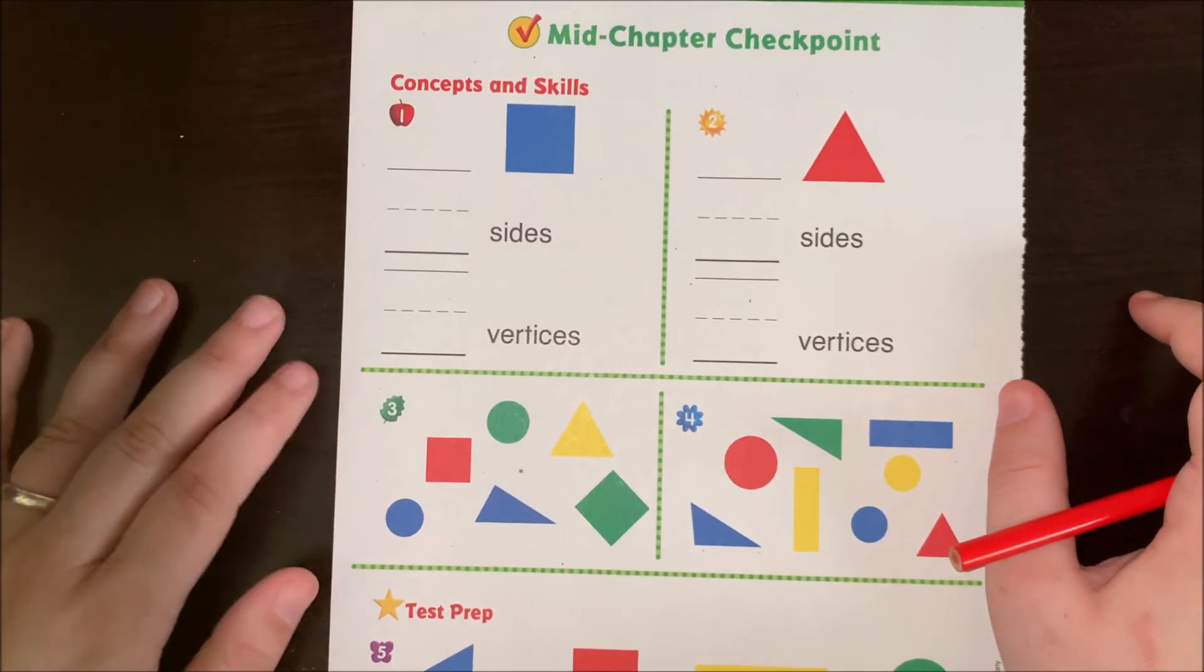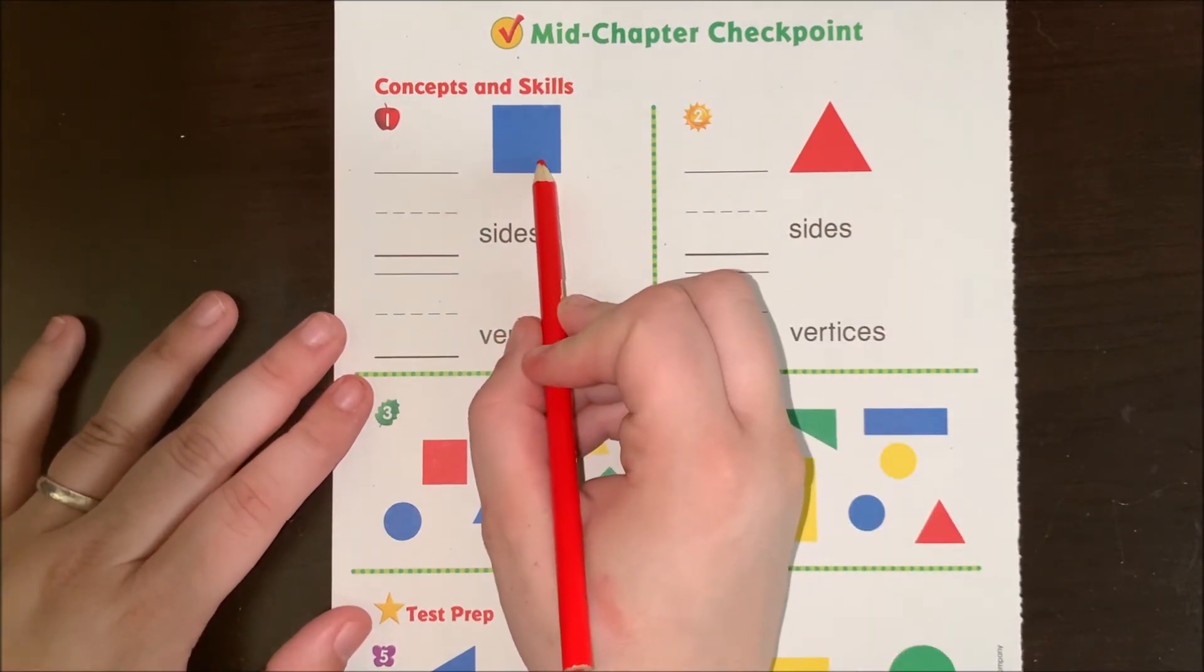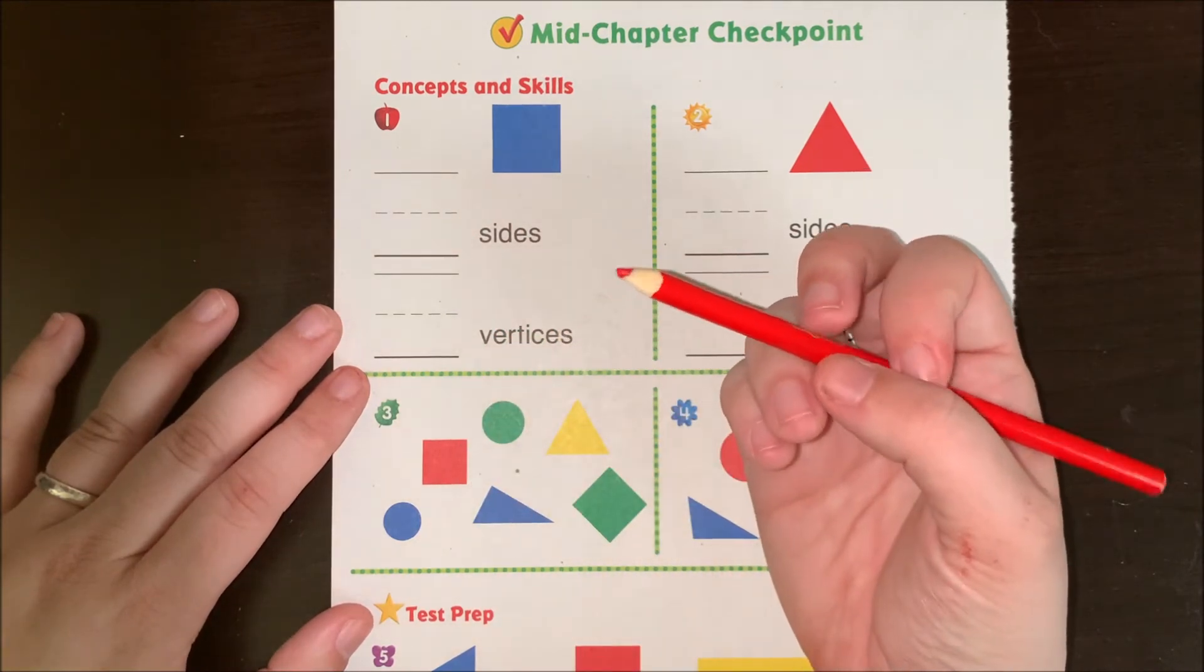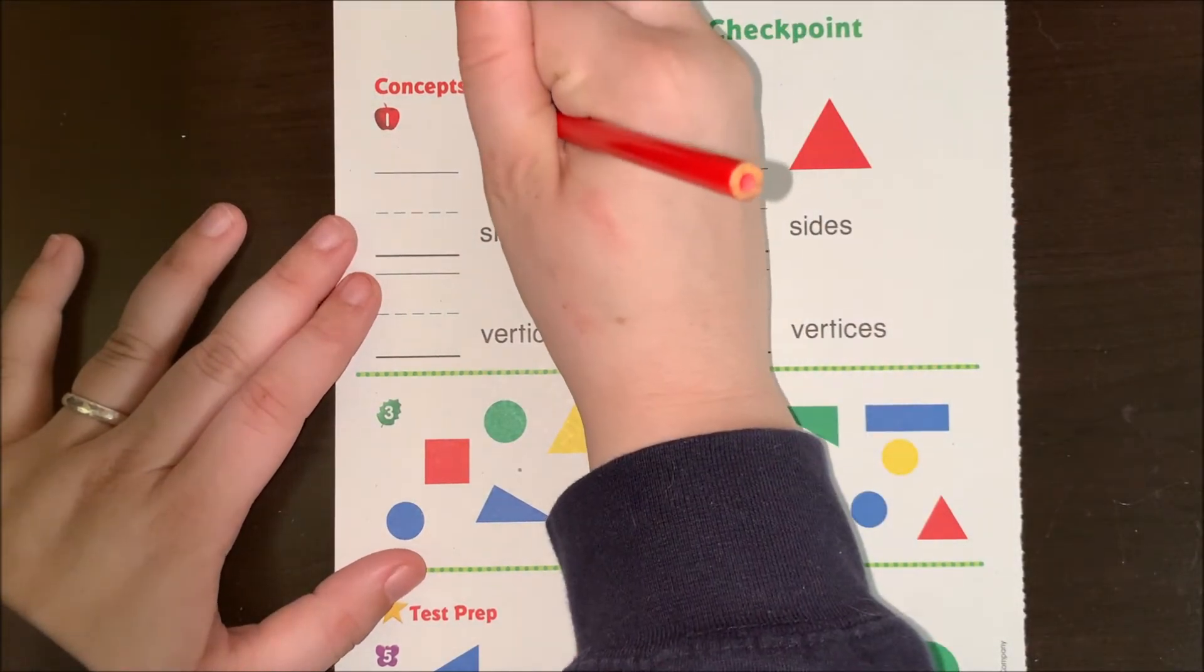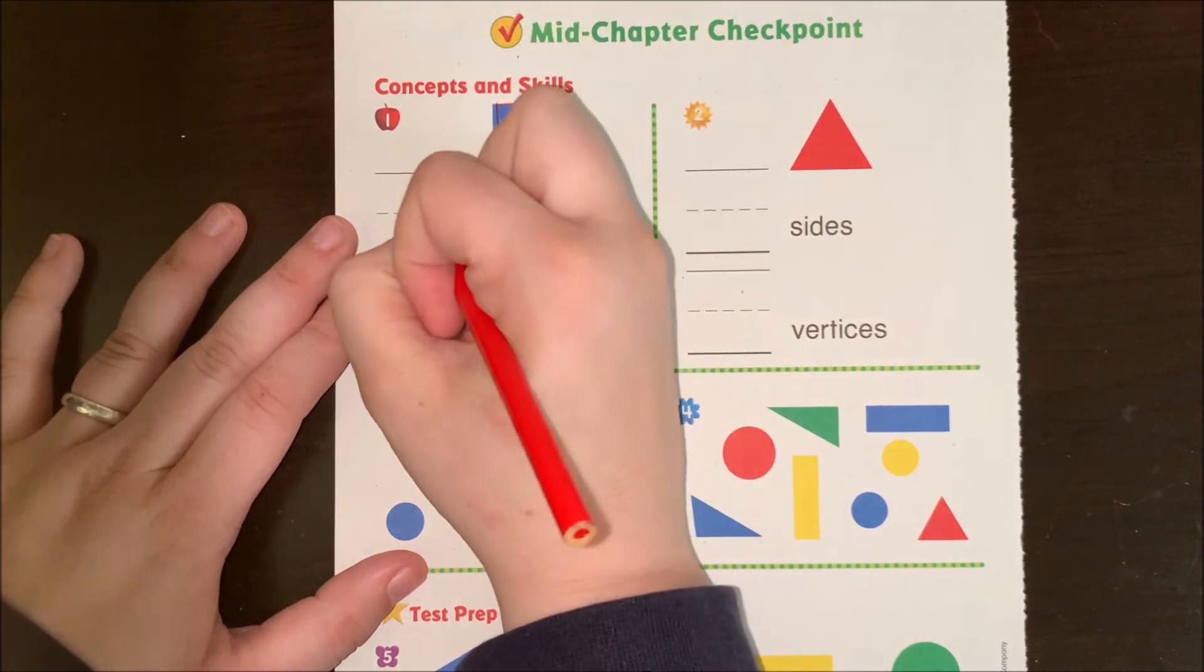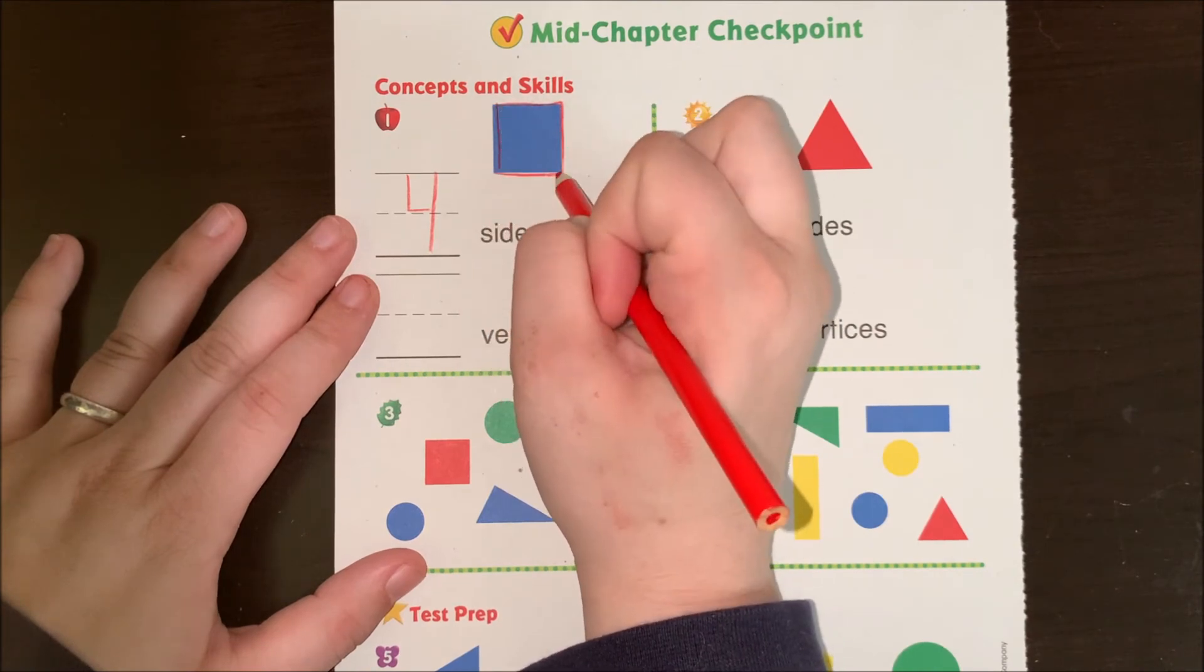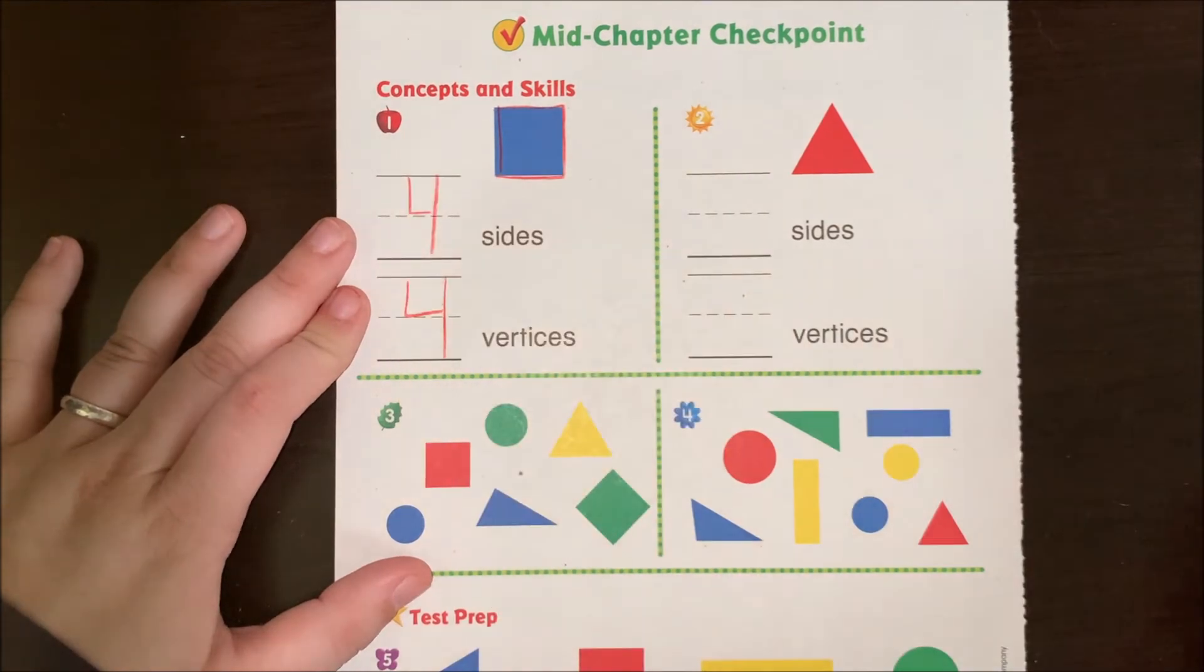Alright, our last page. Hey, we know this shape. Which shape is this? A square. It wants to know how many sides are on a square. So, let's see. Let's trace to see. One, two, three, four sides. And how many vertices? One, two, three, four. They're the same.